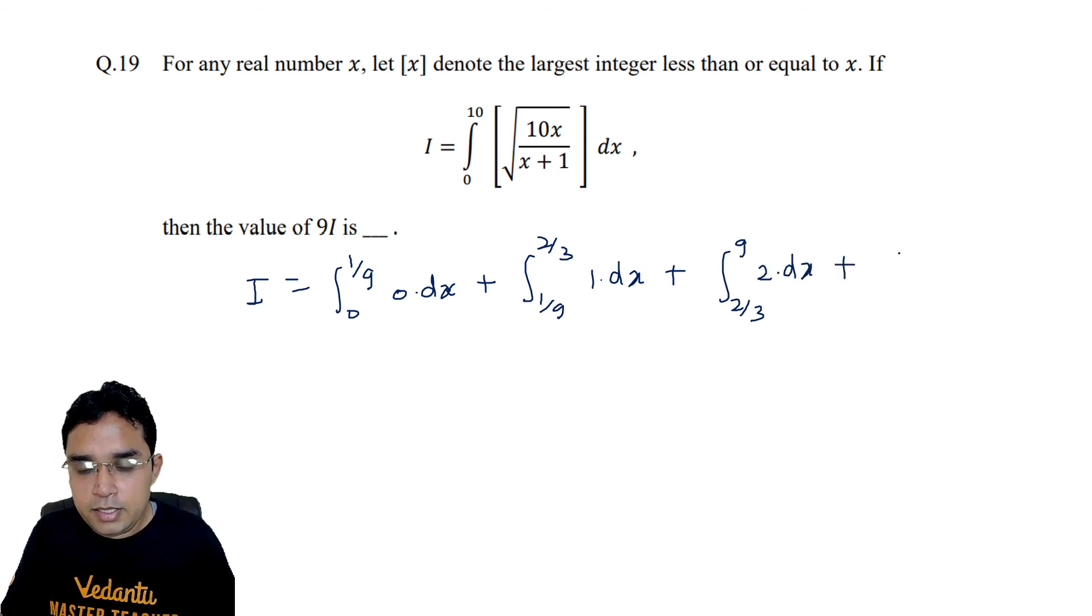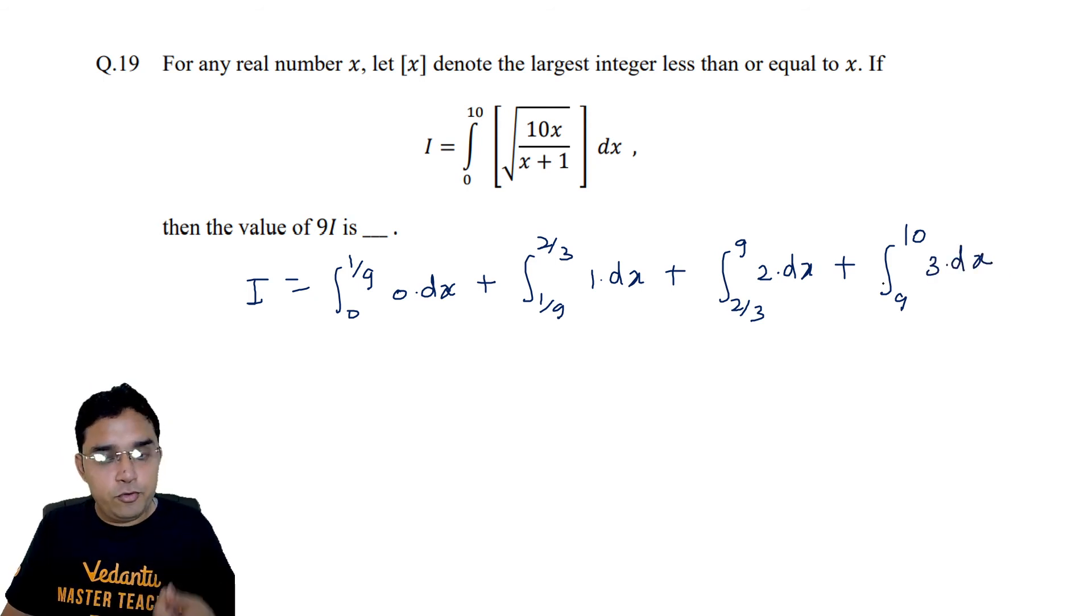And then 2/3 to 9, then it will be 2dx, and in the end 9 to 10, the greatest integer will be 3 only. Maximum value does not exceed 4, so 9 to 10 throughout its greatest integer will be 3 only.